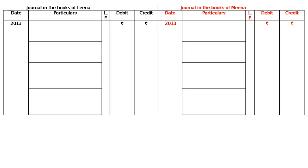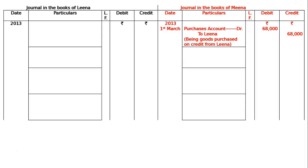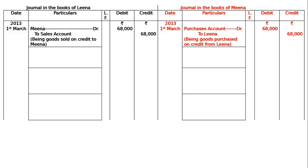The question is: Lina sold goods to Mina on March 2009 for Rs. 68,000. In the books of Mina, purchases account is debited to Lina. March 1, 2013 — purchases account debited to Lina, Rs. 68,000 in debit and credit columns. Being goods purchased on credit from Lina. And Lina, selling to Mina, debits Mina to sales account, Rs. 68,000 in debit and credit columns. Being goods sold on credit to Mina.